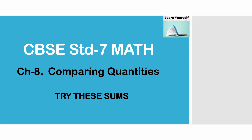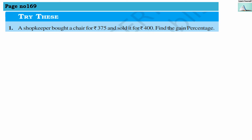Welcome to Laniyatsan. Try this sum, praise number 169. First numerical: a shopkeeper bought a chair for rupees 375 and sold it for rupees 400. Find the gain percentage.